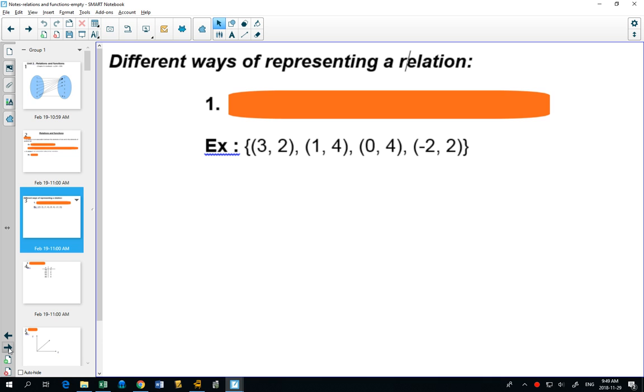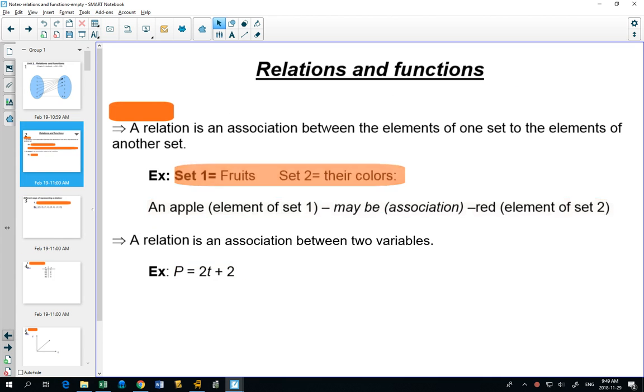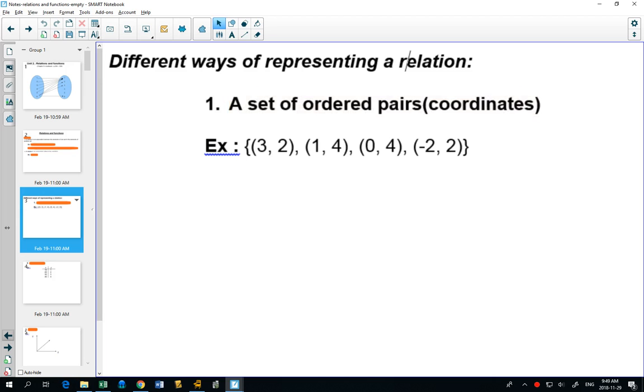So different ways of representing a relation. One way of representing a relation is through a set of ordered pairs. These are like coordinates on a graph. You have your x-coordinate first and your y-coordinate second. And because you have two things together, it makes a relation. Three goes with two, one goes with four, zero goes with four, and negative two goes with two.